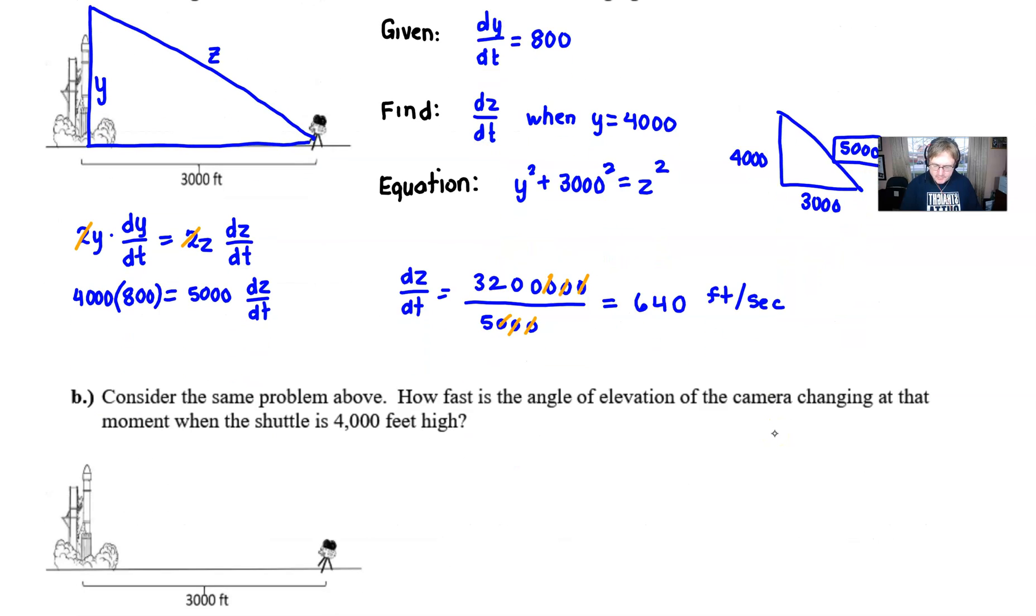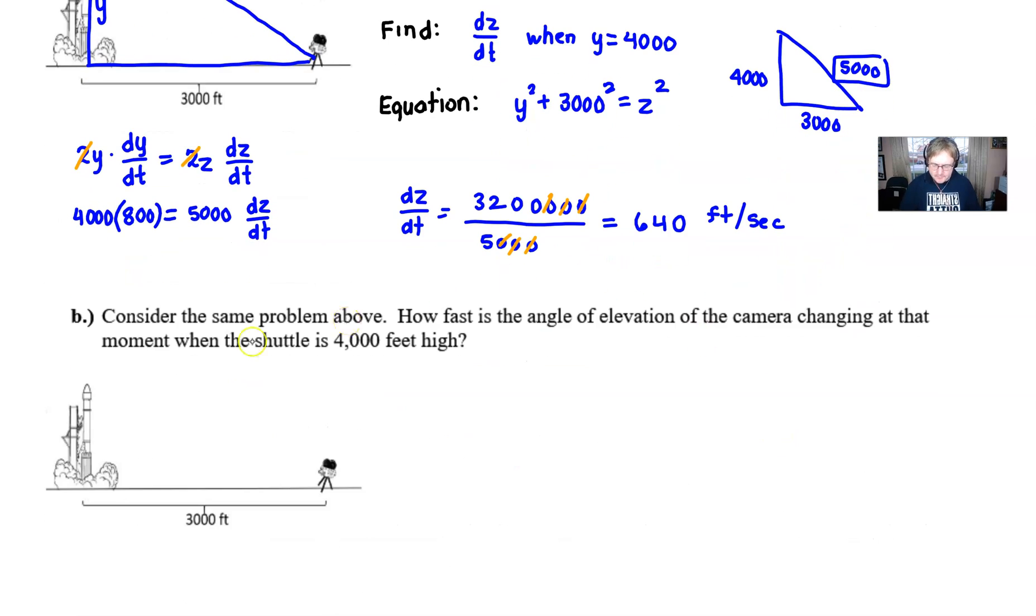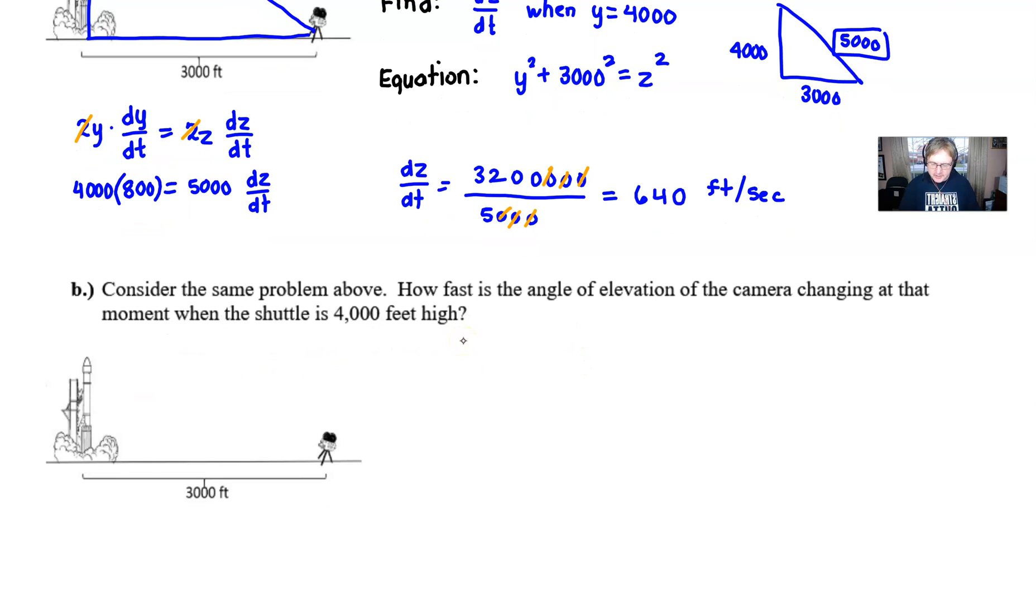So let's go on to part B, which is essentially the same problem. But now, I want to know how fast is the angle of elevation of the camera changing at that same moment when that shuttle was 4,000 feet high. We have this same exact picture. Let's do a better job here. We have the same right triangle, and I'm still going to use Y for this guy. But now, I've got this angle measure theta. We like to use Greek letters for angle measures.